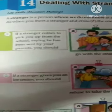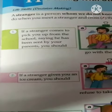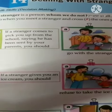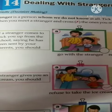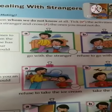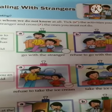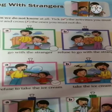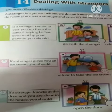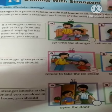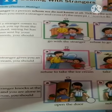Strangers kya hote hai? Jo bahut zyada jisse hume khatra ho, hume dar ho — today we will learn what we should and should not do. A stranger is a person whom we do not know at all. Stranger wo person hote hai jise hum nahi jaante. Aapko activities ko dekhkar tick mark karna hai — right ya wrong.